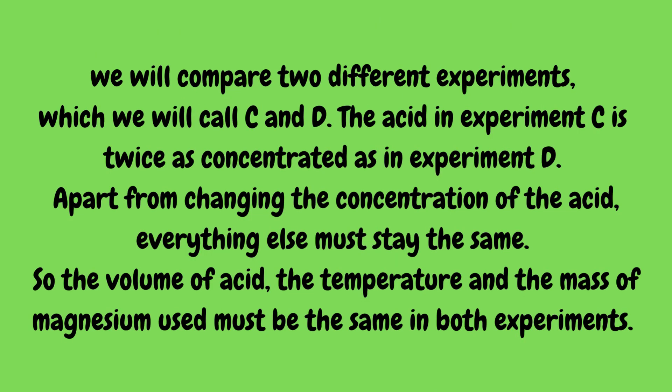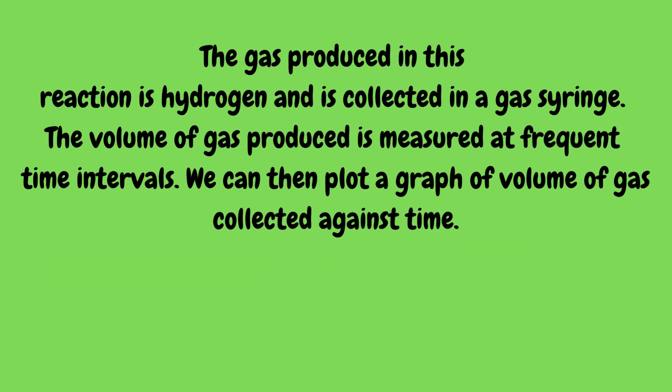We compare two experiments, C and D. The acid in experiment C is twice as concentrated as in experiment D. Apart from changing the concentration of the acid, everything else must stay the same — the volume of acid, the temperature, and the mass of magnesium used must be the same in both experiments. The gas produced, hydrogen, is collected in a gas syringe. The volume of gas produced is measured at frequent time intervals, and a graph of volume of gas collected against time is plotted.